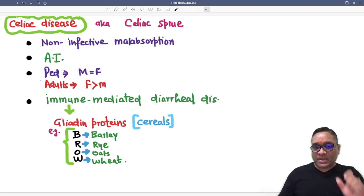The culprit is gliadin protein, which will be present in cereals. What are those cereals? It is remembered by the mnemonic called BROW: Barley, rye, oats and wheat are the culprits where you will be finding gliadin protein causing all the problems.